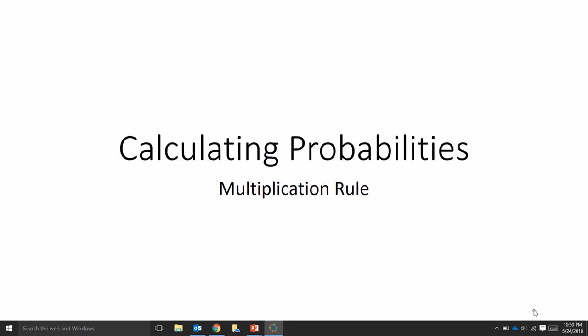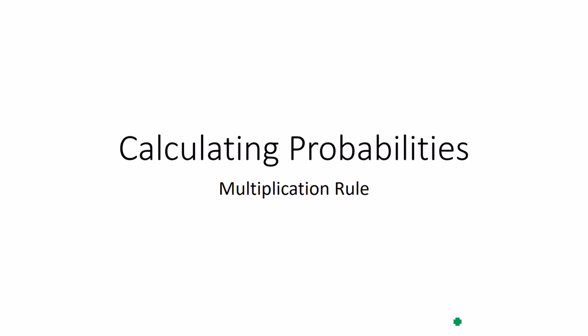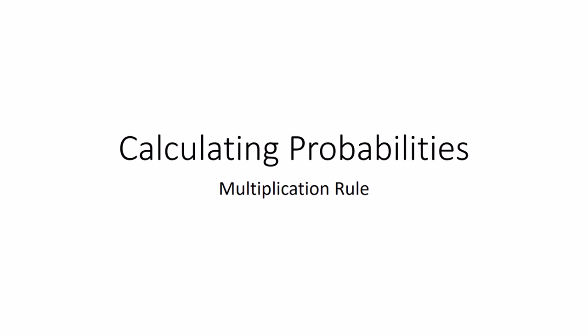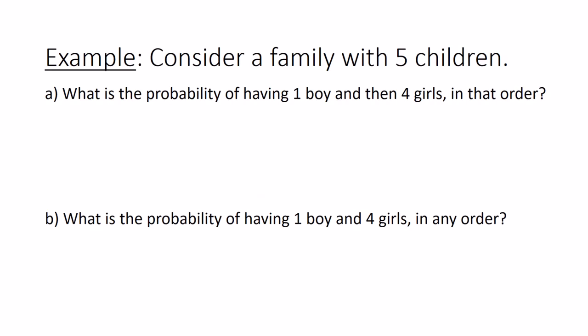This is a video on how to calculate probabilities using the multiplication rule. In my example I have a family with five children. First we want to calculate the probability of having one boy and then four girls.